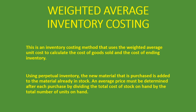Using perpetual inventory, the new inventory that is purchased is added to the material already in stock. An average price must be determined after each purchase by dividing the total cost of stock on hand by the total number of units on hand. This is what the weighted average inventory costing does — it calculates the average price by dividing the total cost of all stock you have by the total number of units on hand. You'll understand this much better when we go through the example.